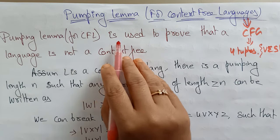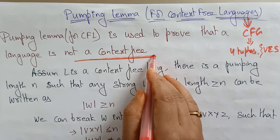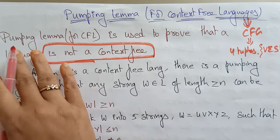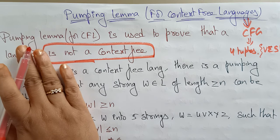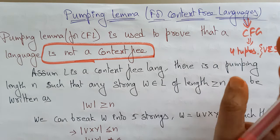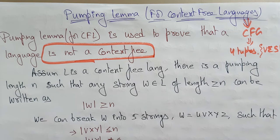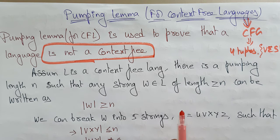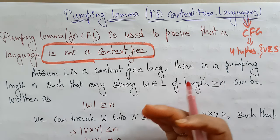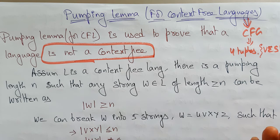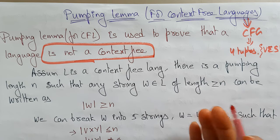The pumping lemma for context-free languages is used to prove that a language is not context-free. Whatever language is given, we have to prove it is not context-free. To do this, we use a contradiction: assume the given language is a context-free language and then try to prove it is not.